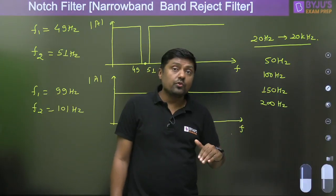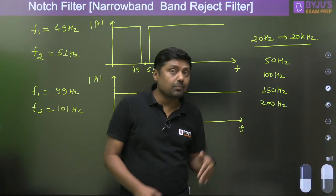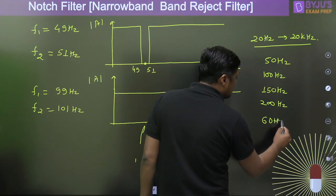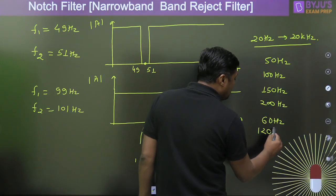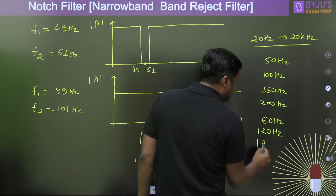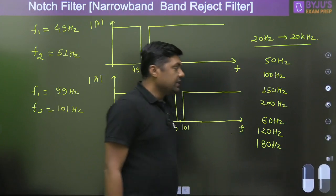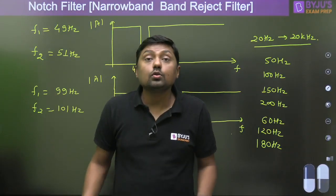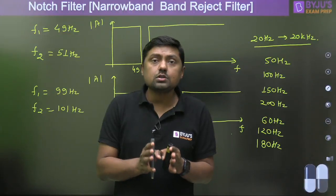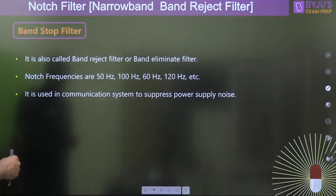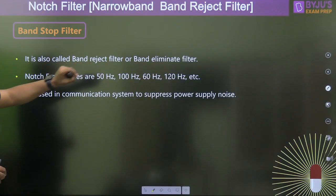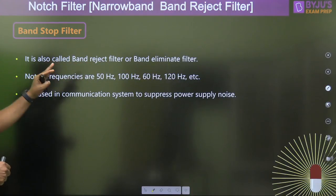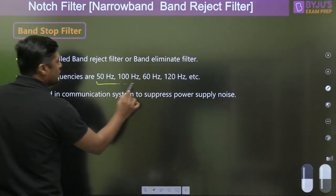If we are in the USA, the supply frequency is 60 Hz, and the harmonics are 120 Hz and 180 Hz. These frequencies — 50 Hz, 100 Hz in India, and 60 Hz, 120 Hz in the USA — are called notch frequencies. The notch filter is also called a band reject filter or band elimination filter, and it is used in communication systems to suppress power supply noise.